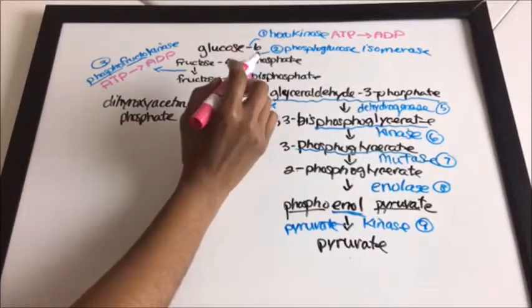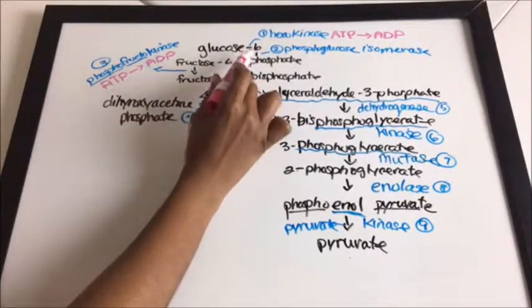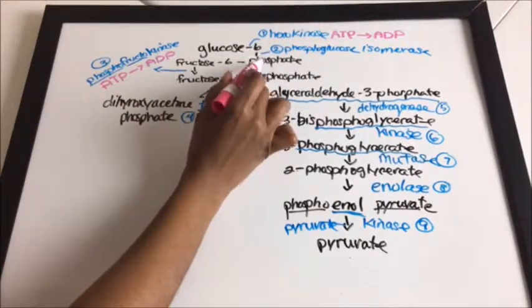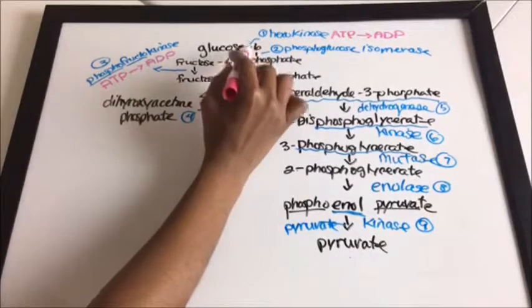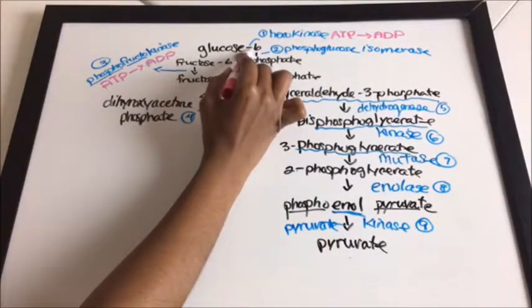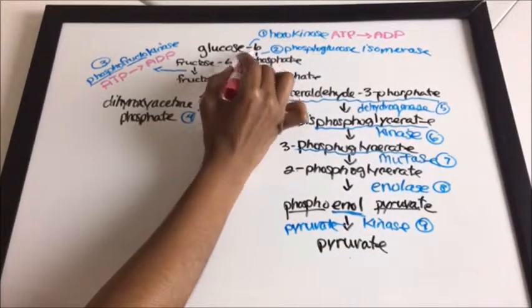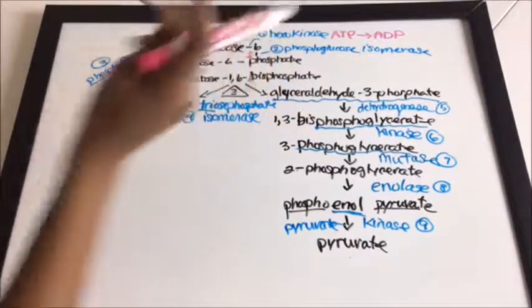Now remember, between glucose-6-phosphate and fructose-6-phosphate, when these reactions occur it can be reversed — so it's a reversible reaction.